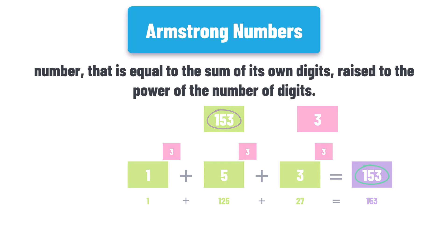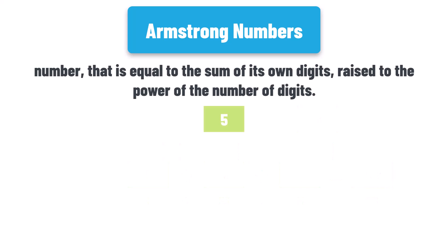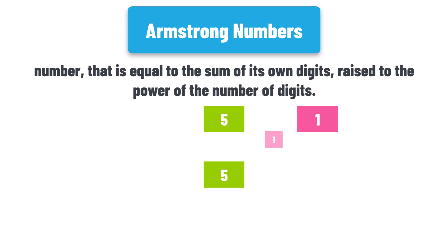Let's check another number, for example five. This number consists of only one digit, which is the number itself, five. So we have only one calculation: five to the power one. The result is number five, which is also the number itself. This means number five is an Armstrong number.